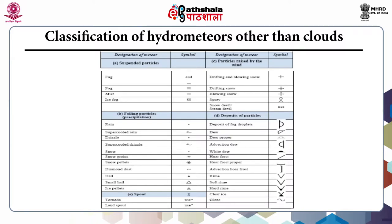The classification of clouds we will see in detail in another module. In this classification, the meteors are divided into five groups: suspended particles, falling particles (that is, from precipitation), spout, particles raised by the wind, and the deposits of particles. In the suspended particles, it includes fog, mist, and ice fog.